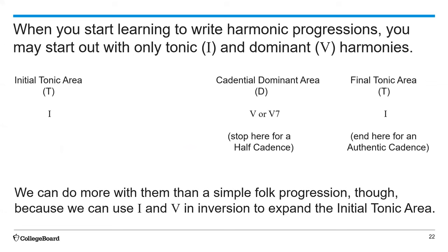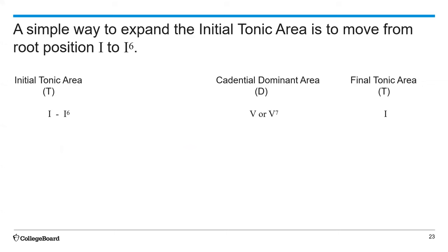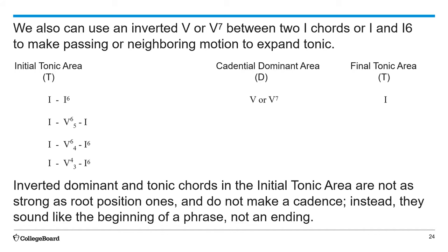When you start learning to write harmonic progressions, you may start out with only tonic and dominant harmonies — an initial tonic area, a potential dominant area, and a final tonic area. But we can do more with just these two chords than a simple folk progression, because we can use I and V in inversion to expand the initial tonic area. For example, instead of just playing a root position tonic chord, we can move from root position I to I6. If you have a four-measure phrase with a harmonic rhythm of one chord per measure, you can have I root position, I6, then V or V7, and I, making a nice four-measure phrase. We can also use an inverted V or V7 between two I chords, or between I and I6, to make a passing or neighboring motion to expand tonic.